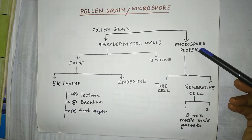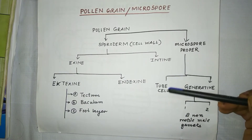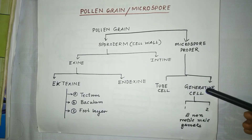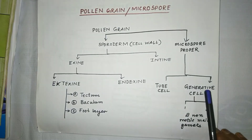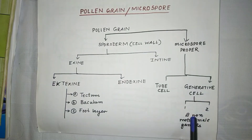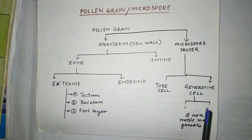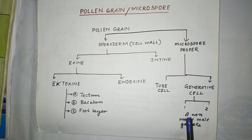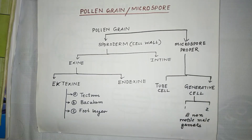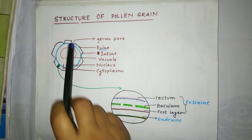The microspore proper, the innermost cell, consists of two parts: tube cell (or vegetative cell) and generative cell. The generative cell gives rise to two non-motile male gametes.